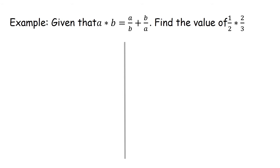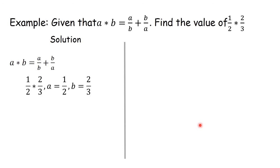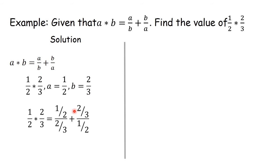Another example. Given that A★B is equal to A over B plus B over A, find the value of (1/2)★(2/3). We shall use the same knowledge, only that this is involving fractions. So A★B equals A over B plus B over A. For (1/2)★(2/3), our A is 1/2 and B is 2/3. We substitute: where there is A we put 1/2, and where there is B we put 2/3. So we have (1/2) divided by (2/3), then add (2/3) divided by (1/2).